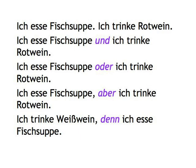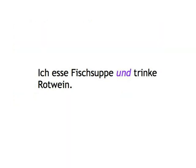Note that the conjunction as the link between the sentences doesn't count as the first element of the sentence it precedes. The word order, therefore, doesn't change after und, oder, aber, and denn — you can basically just ignore them. Note that you don't need a comma when you use und and oder. If you leave out the subject of the second clause because it's the same as the subject in the first clause, the verb stays where it was. Ich esse Fischsuppe und trinke Rotwein. The ich is implied in the second sentence and therefore continues to count as the first idea.